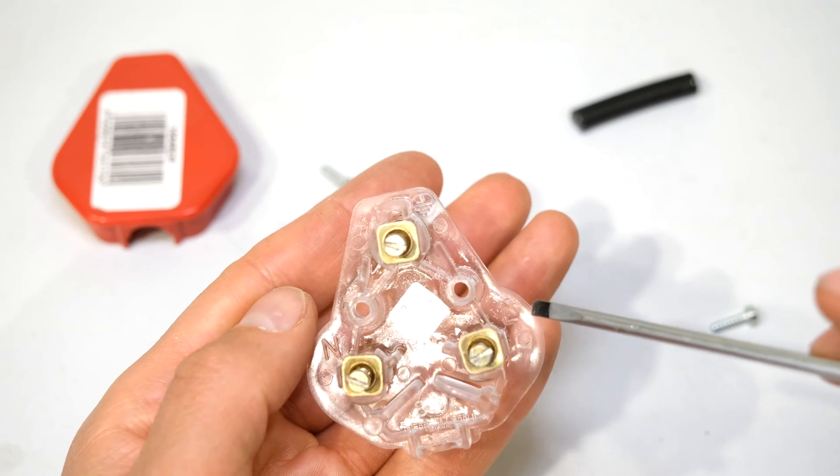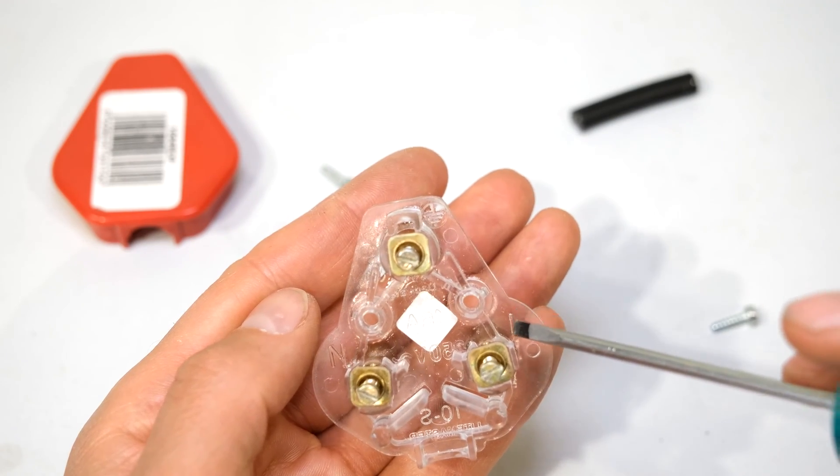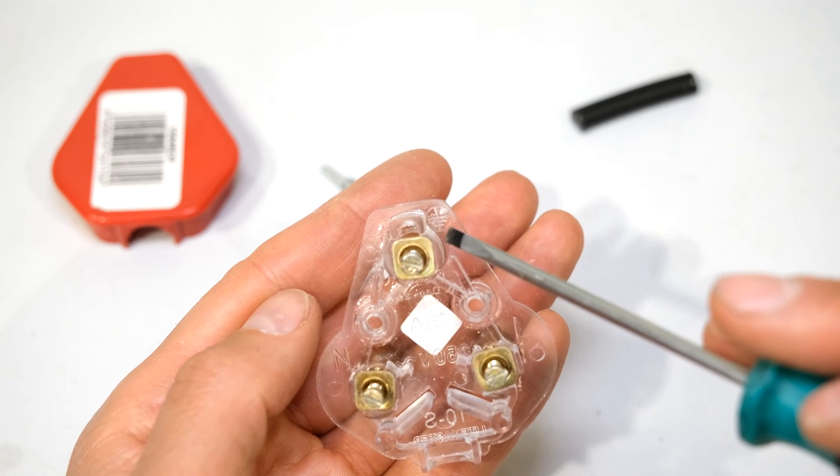Loosen the screws. On most plugs, it actually says live, neutral and earth. So if you have a look closely, there you see the L, there's the N and there's the earth.